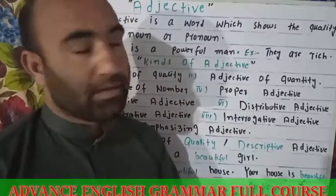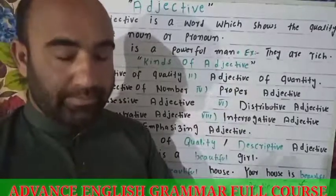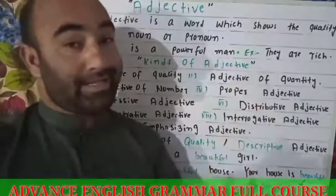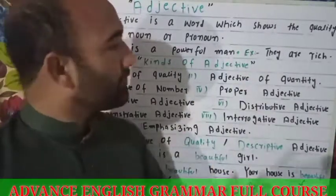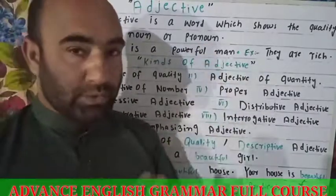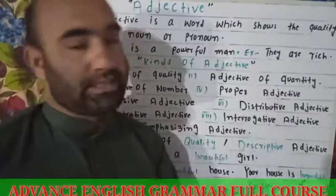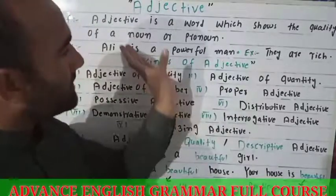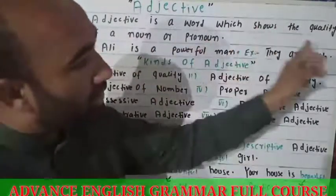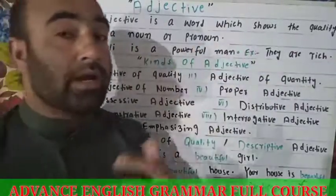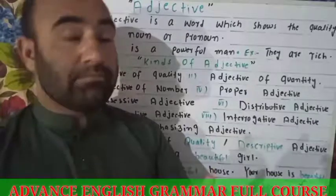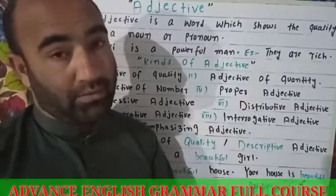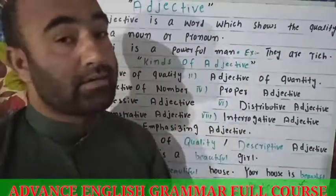A pronoun is basically a combination of two words: 'pro' and 'noun.' Pro means instead of. Pronoun is used instead of a noun to avoid repetition. So adjective is a word which shows the quality of a noun or pronoun — it modifies and adds something to the meaning of a noun or pronoun.